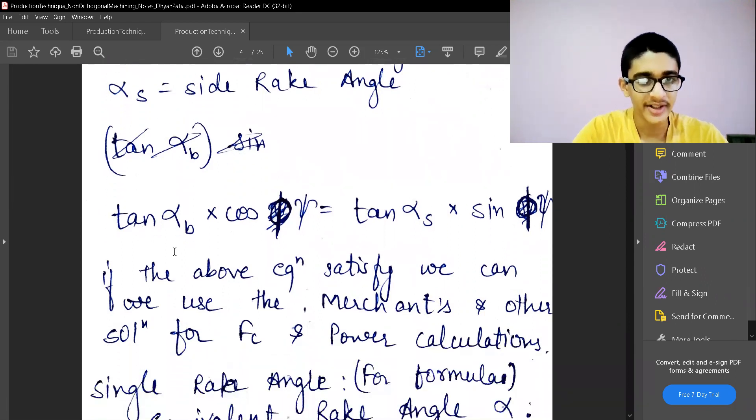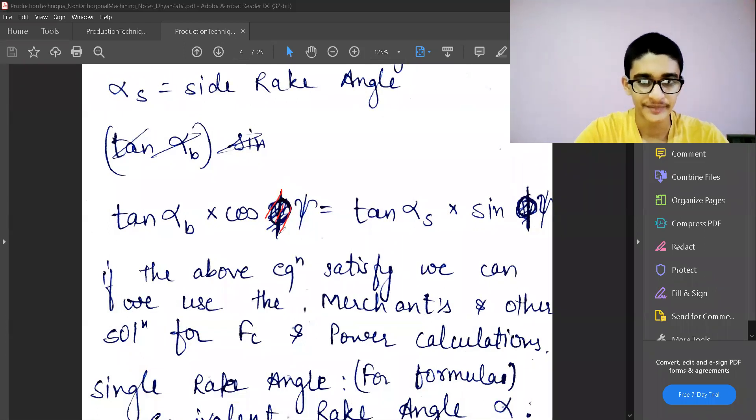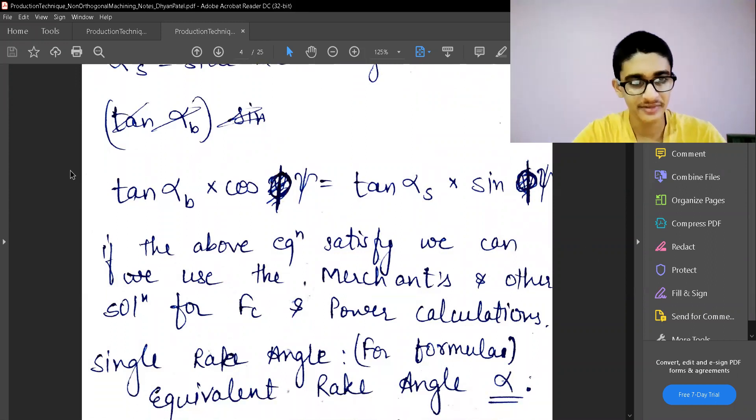A condition has been given: tan alpha_b times cos psi equals tan alpha_s times sin psi. Note that phi doesn't exist here; this is cos psi and sin psi. If the above equation is satisfied, then we can use the merchant's and other solutions for Fc and the power calculations.